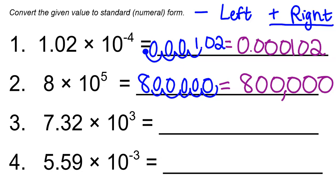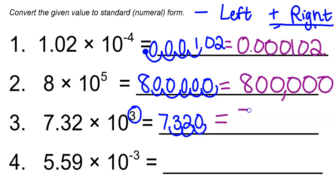Number three: 7.32 times 10 to the 3rd. We move the decimal point three times to the right because our exponent is positive — one, two, three. That empty space we fill in a zero, giving us 7,320. We put a comma there to make it easier to read.